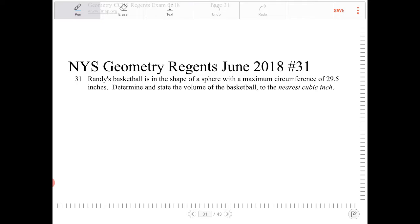So the volume of a sphere can be modeled with the equation four thirds pi r cubed. You're told that the circumference of the sphere is 29.5.